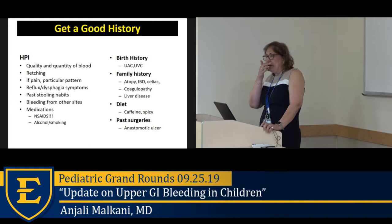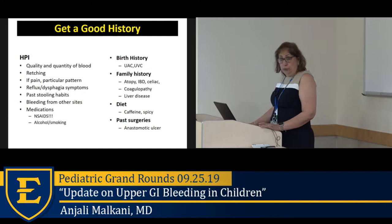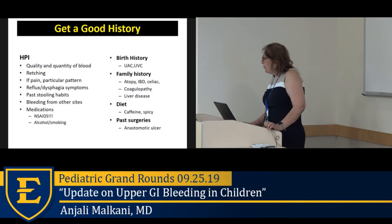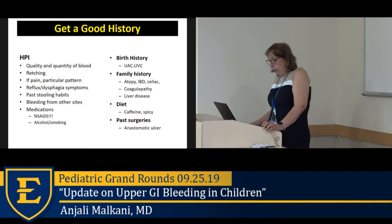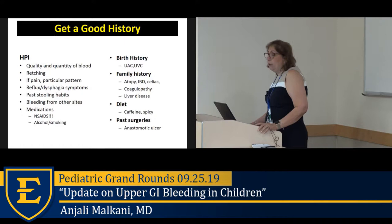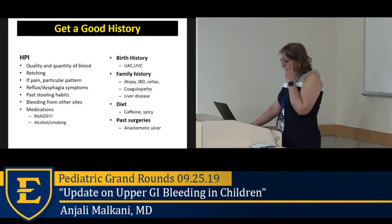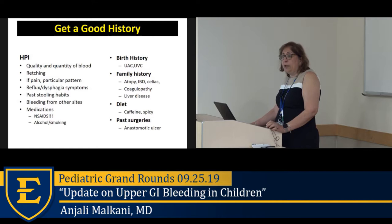Ask about any pain pattern — peptic pain could indicate bleeding from a peptic ulcer. Ask about reflux or dysphagia symptoms, past stooling habits, and bleeding from other sites as a clue to coagulopathy. Ask about medications — prescription and non-prescription, especially NSAIDs, alcohol, and smoking, which decrease the mucosal barrier. Birth history is important: UAC or UVC placement in the NICU can cause portal vein thrombosis and portal hypertension. Ask about family history of atopic illness, IBD, coagulopathy, or liver disease. Diet — caffeine, Mountain Dew, and spicy food can cause gastritis. Past surgical history may reveal an anastomotic ulcer.